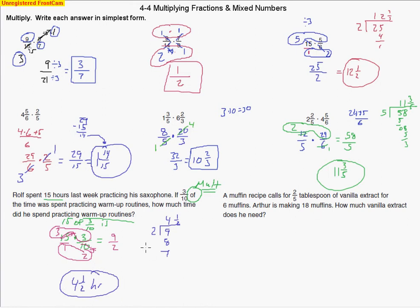A muffin recipe calls for 2/5 tablespoons of vanilla extract for 6 muffins. Arthur is making 18 muffins. So how much vanilla extract does he need? We need to find out how many groups of 6 is in 18. So 6 is with 2/5. We need 2/5 of the vanilla extract when we have 6 muffins. If we have 6 other muffins, we need another 2/5. And 6 more muffins would mean another 2/5. 6 plus 6 plus 6 makes 18. So we could just add these numbers together.